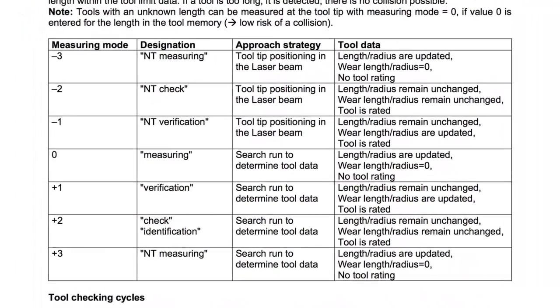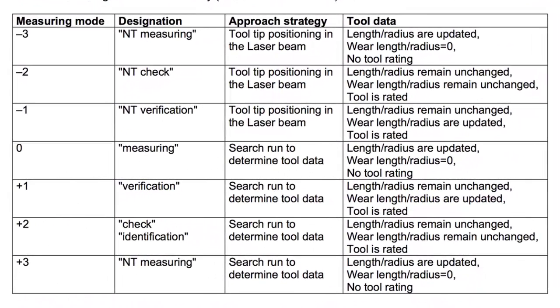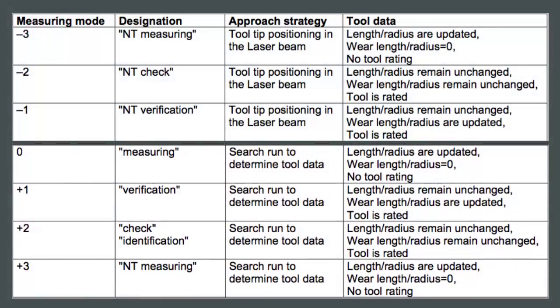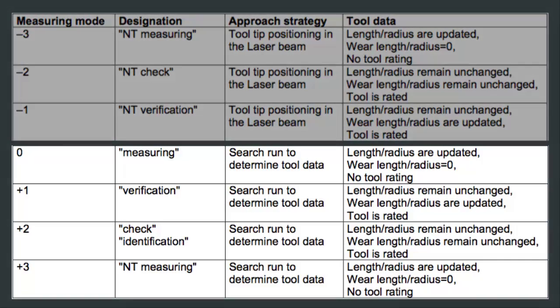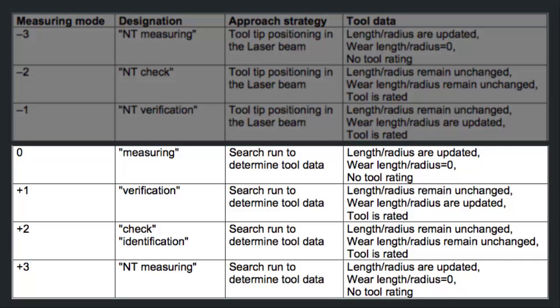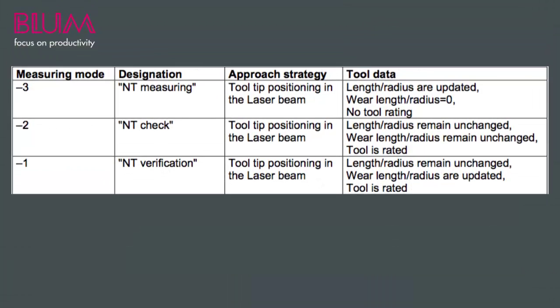To simplify our explanation of the measuring modes, we'll separate them into two groups: for situations when tool dimensions are known, and for situations when tool dimensions are unknown. First, let's look at the B variables to use for situations when a tool's dimensions are known.